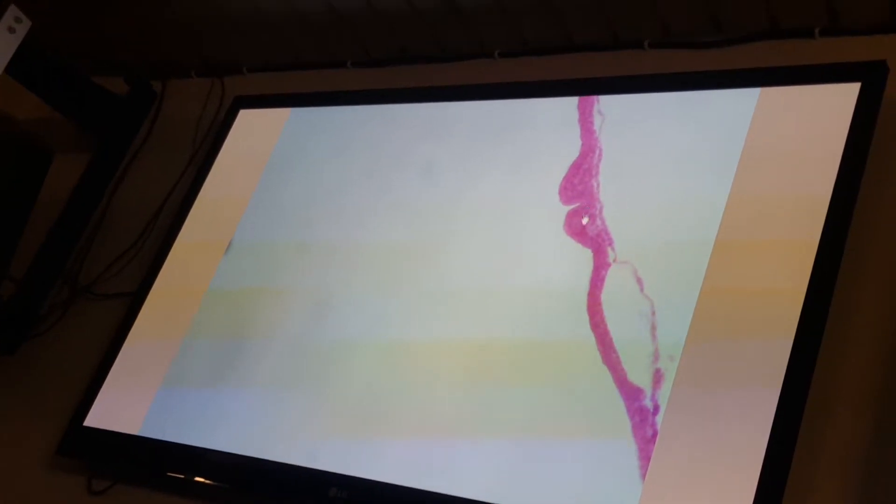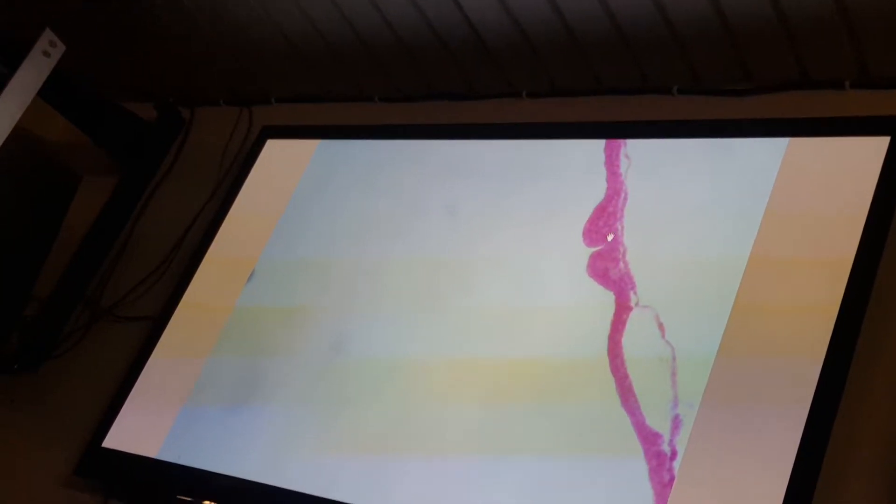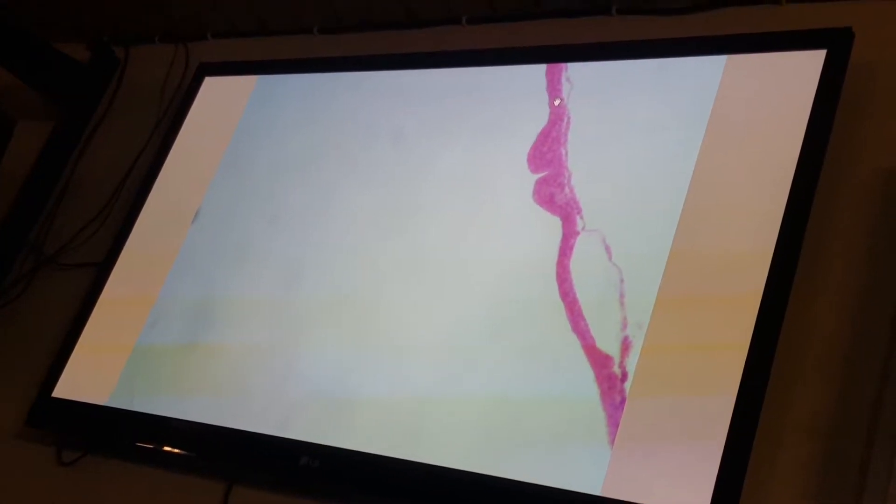Later, the invaginating cells migrate to the lateral, forming mesoderm in the middle, and endoderm after being interpolated with the hypoplast.